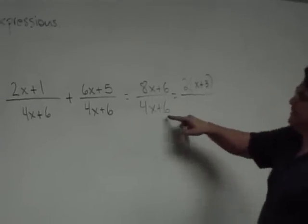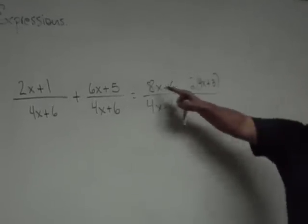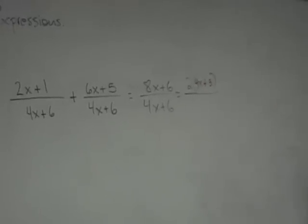And on the bottom, any common factors? It's 4x. I'm sorry. Oh, 4x plus 3. 2 times 4x is 8x. And then 2 times 3 is 6. Very good. Thank you.